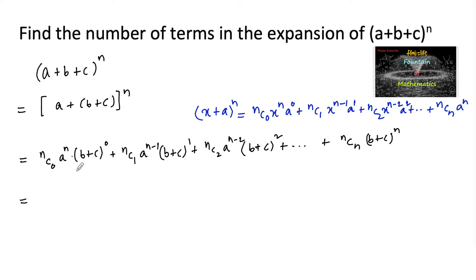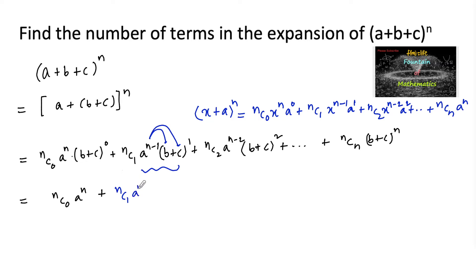The first term a^n (b+c)^0 equals 1, so we have only one term: nc0 a^n. In the second term, since (b+c)^1 expands to two parts, we get nc1 a^(n-1) b + nc1 a^(n-1) c — that is, two terms together.